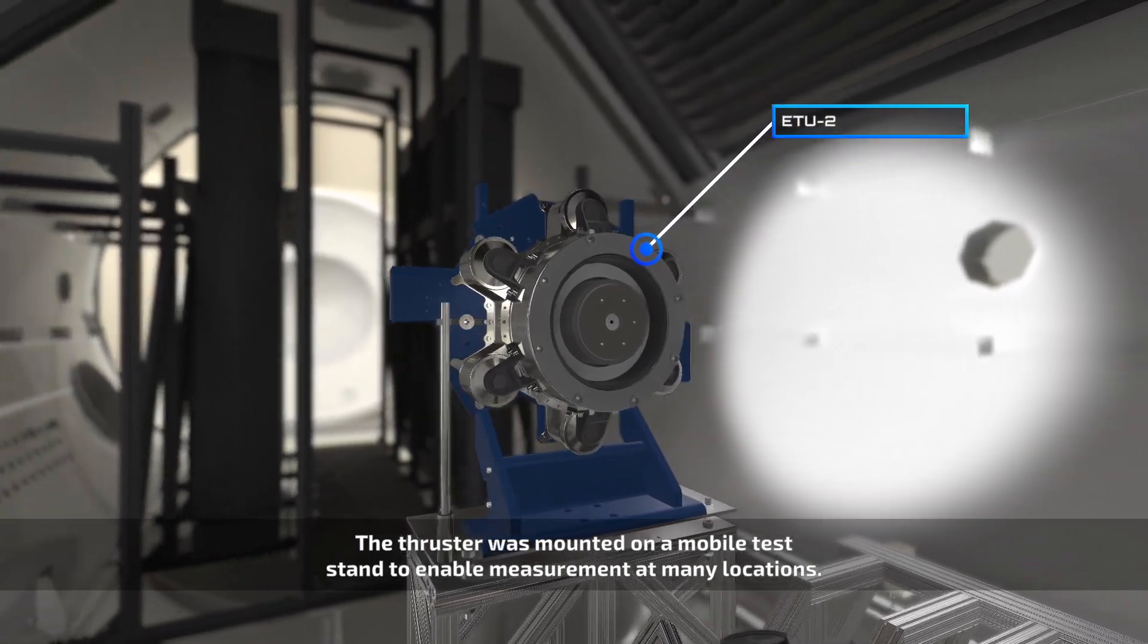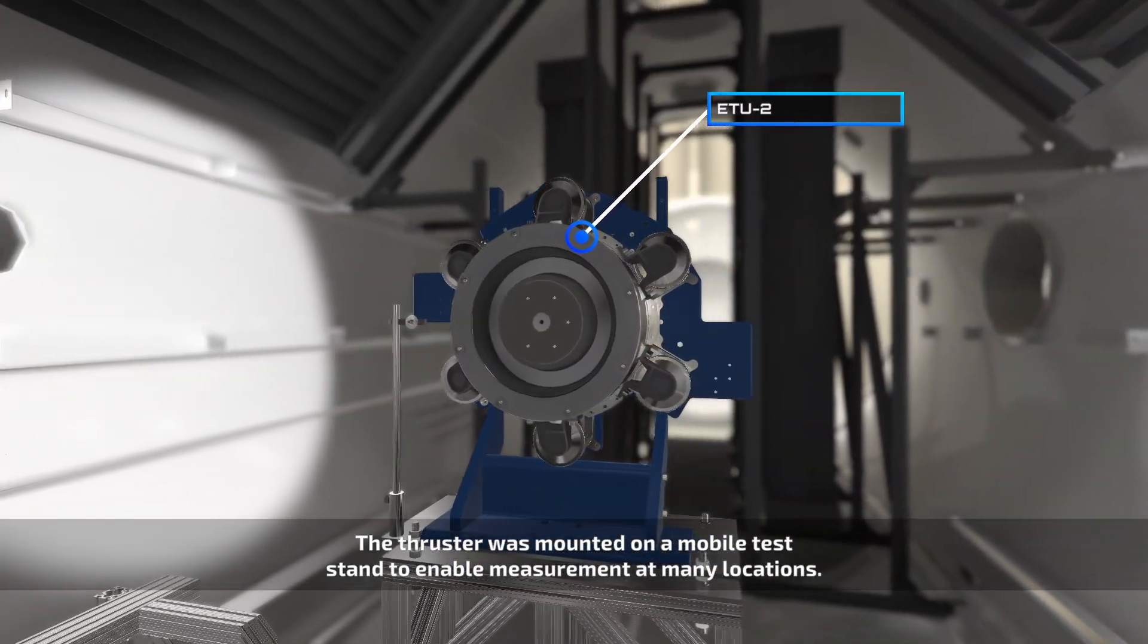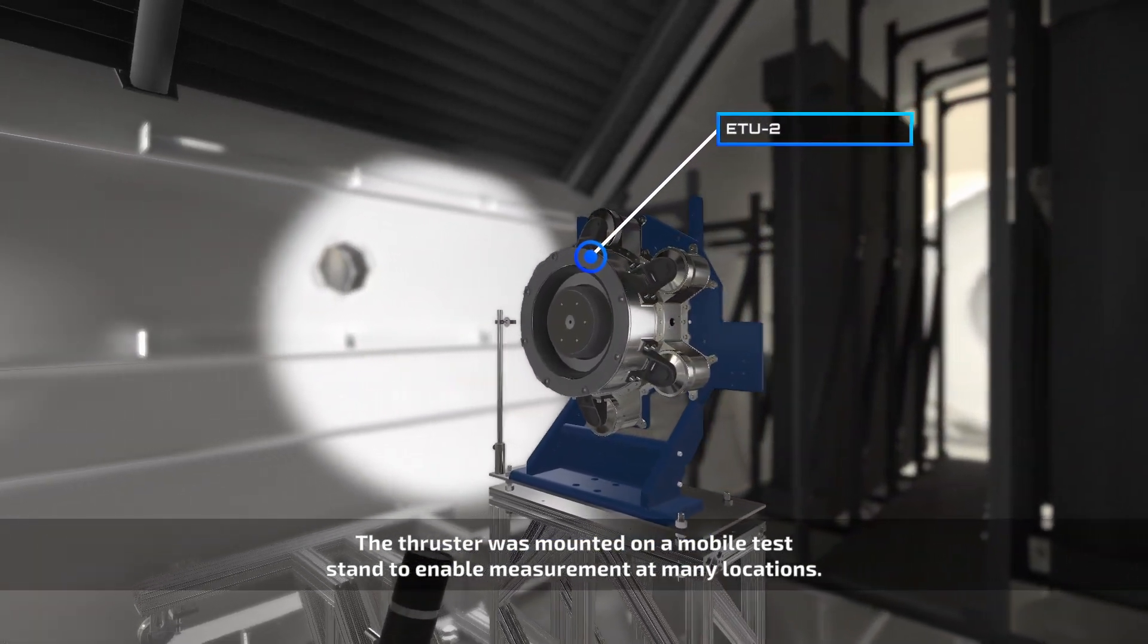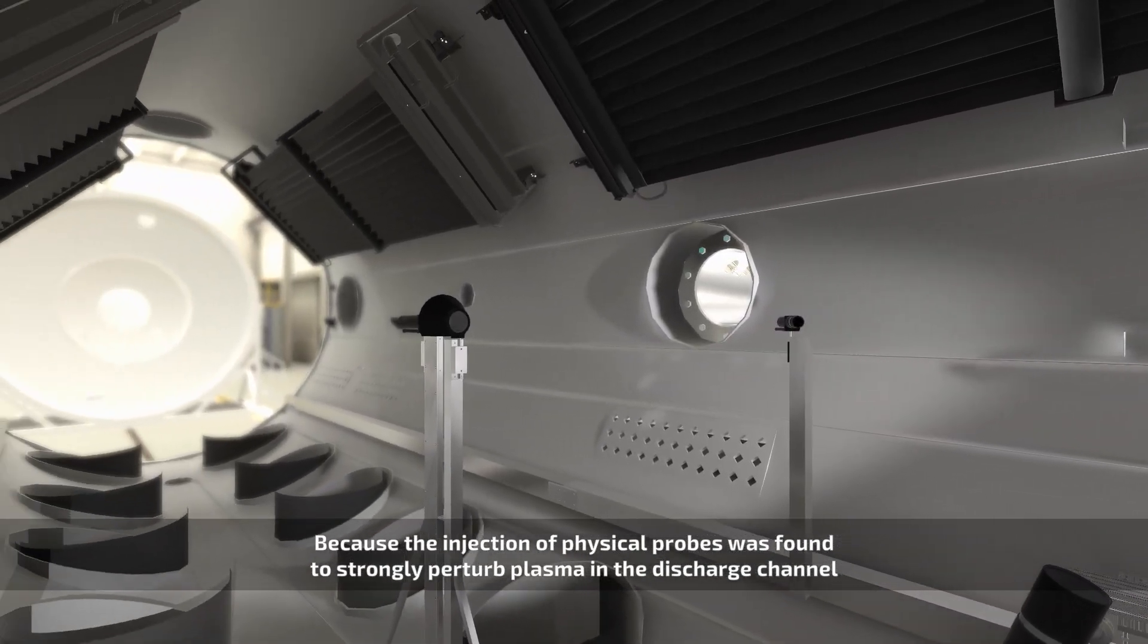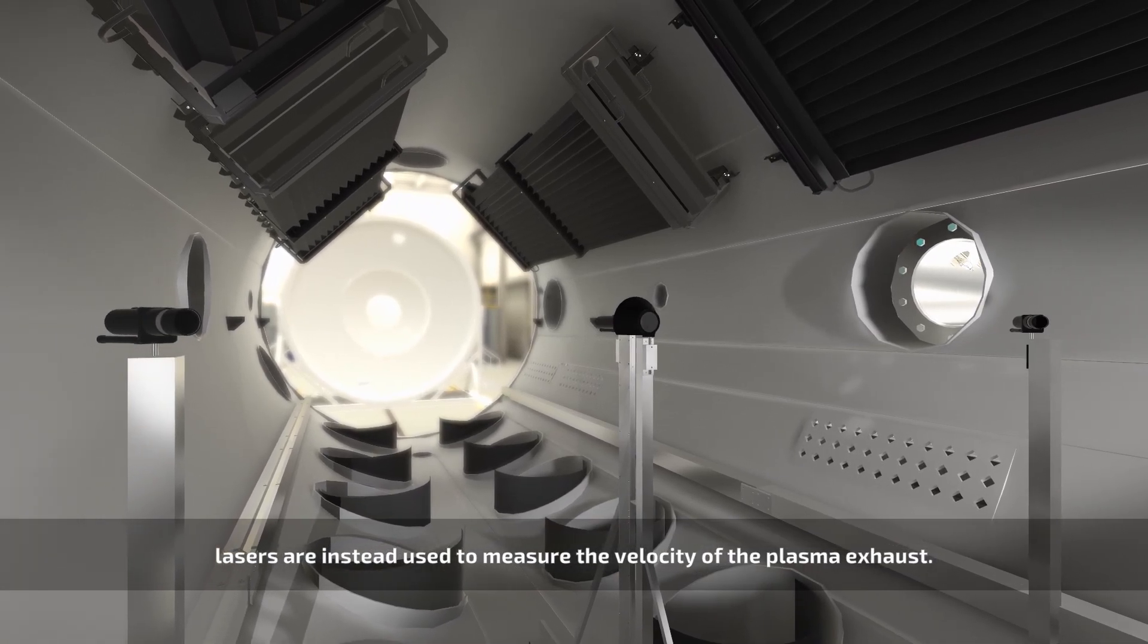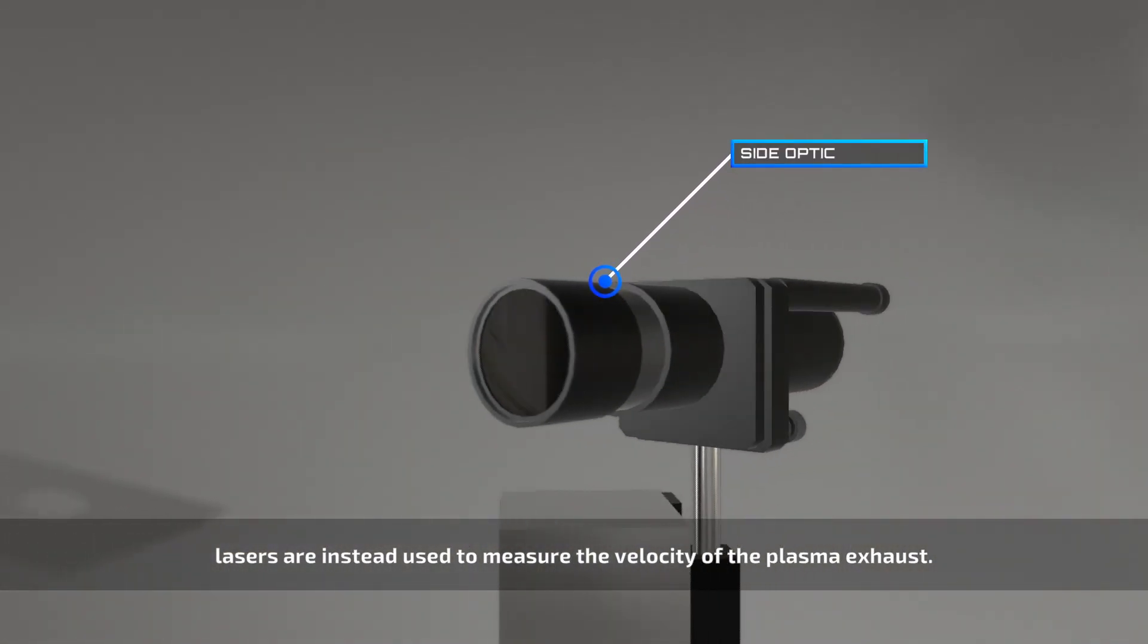The thruster was mounted on a mobile test stand to enable measurement at many locations. Because the injection of physical probes was found to strongly perturb plasma in the discharge channel, lasers are instead used to measure the velocity of the plasma exhaust.